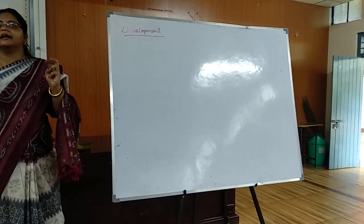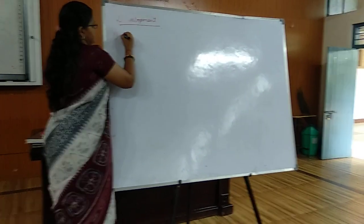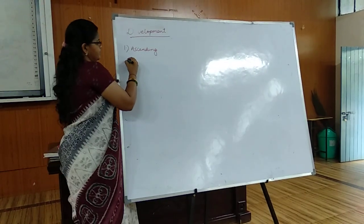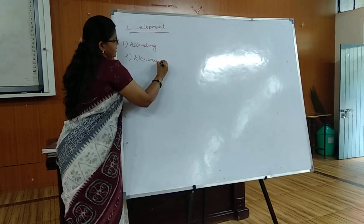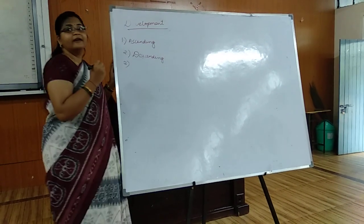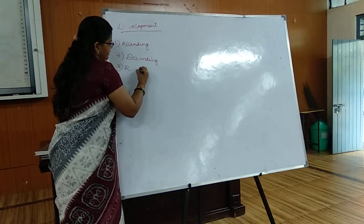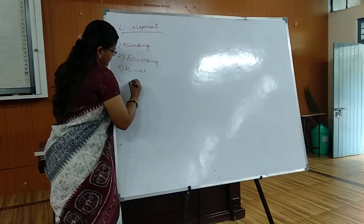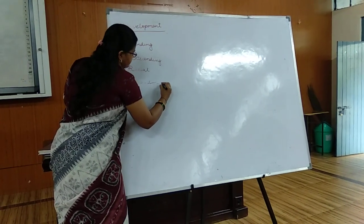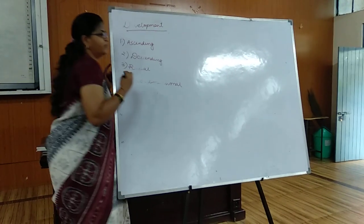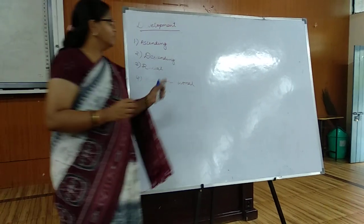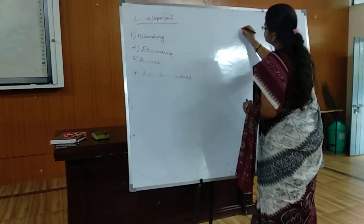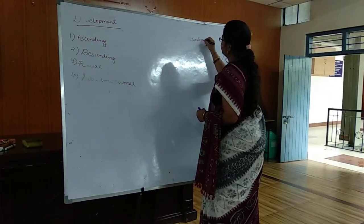Development in paper chromatography can be done in four ways. One is the ascending developmental method, then the descending developmental method, then the radial developmental method, and the last one is the two-dimensional development method.